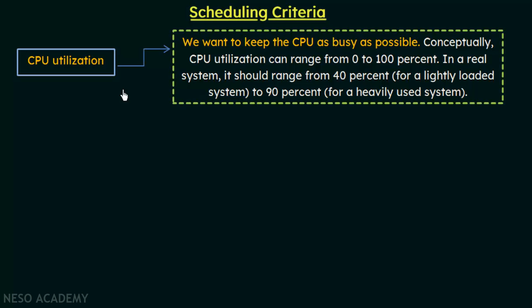We want to make very efficient utilization of our CPU. We don't want the CPU to remain idle; we want it to be utilized as much as possible. In a real system, CPU utilization should be between 40% and 90% — at least 40% in a lightly loaded system and up to 90% in a heavily loaded system.